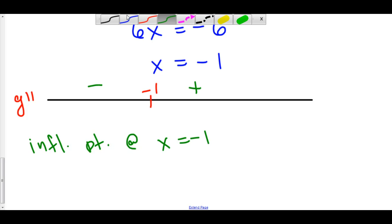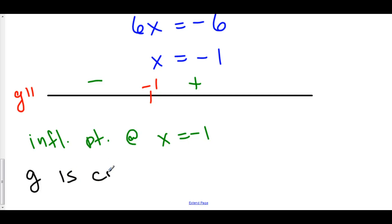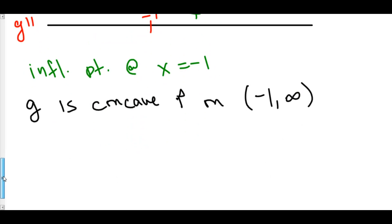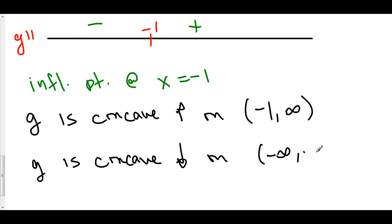Furthermore, g is concave up on the interval from negative 1 to infinity because that's where g double prime is positive. And g is concave down on the interval from negative infinity to negative 1 because that's where g double prime is negative.